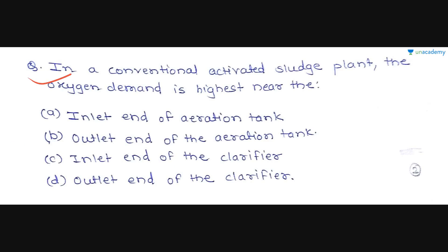The next question is: in a conventional activated sludge plant, the oxygen demand is highest near — Option A is the inlet end of the aeration tank. Option B is the outlet end of the aeration tank. Option C is the inlet end of the clarifier. Option D is the outlet end of the clarifier.